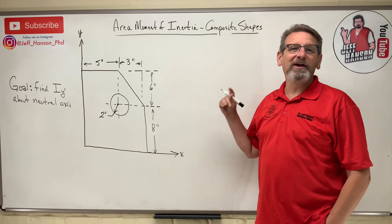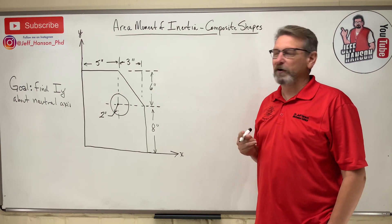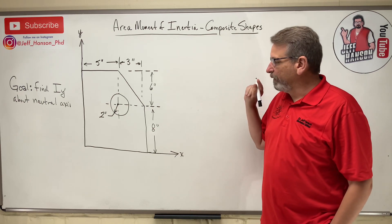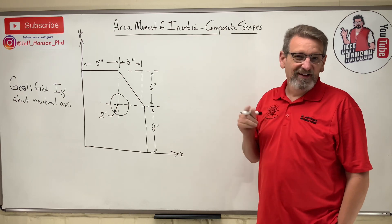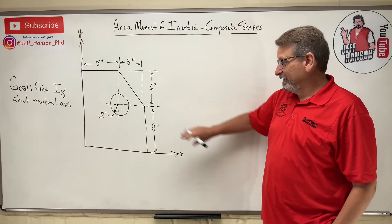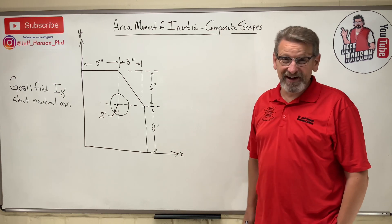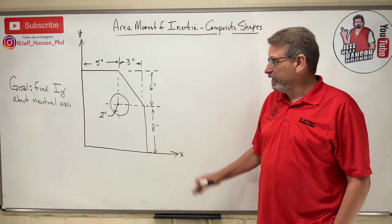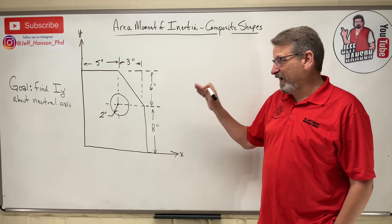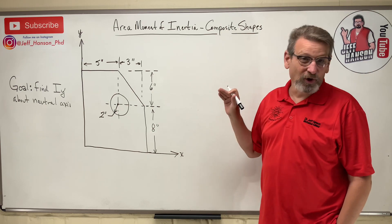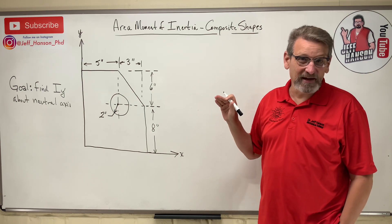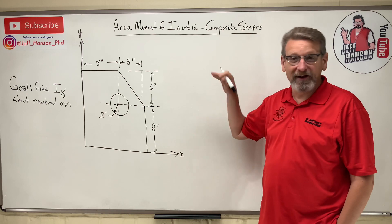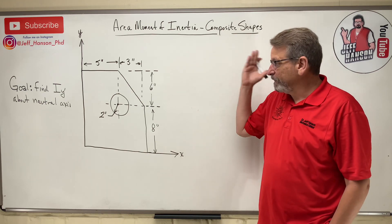All right, party people, we are back for another video. We're getting close to the end — area moment of inertia, composite shapes. This one's not symmetric, so it's a little bit harder. We're finding I_y-prime; I called it something different this time instead of I_y-y, just to show you something different.